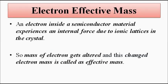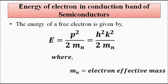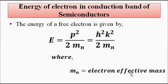So the mass of the electron gets altered, and this is where the concept of effective mass of the electron comes into play. The free electron inside a semiconductor material experiences internal forces due to the ionic crystal lattices — forces of attraction or repulsion — and as a result, the mass of the electron gets altered. This changed electron mass is called the effective mass, represented as m_n. The equation now gets modified: everything remains the same, only m₀ is replaced by m_n, the effective electron mass.